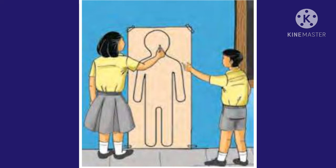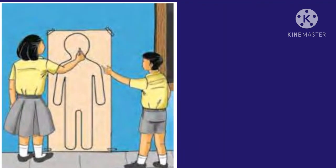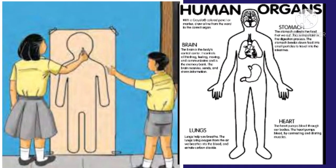Now get other students to point out the right places of the following organs within the outline: the brain, lungs, heart, and stomach.